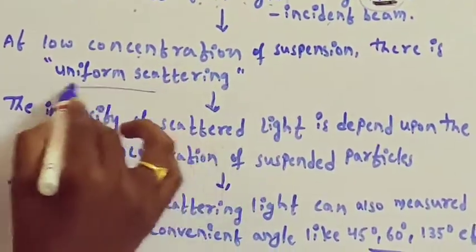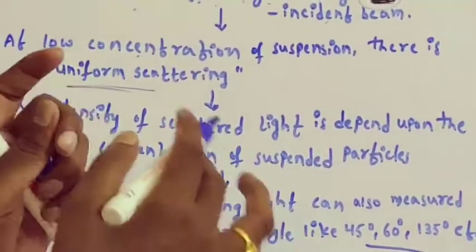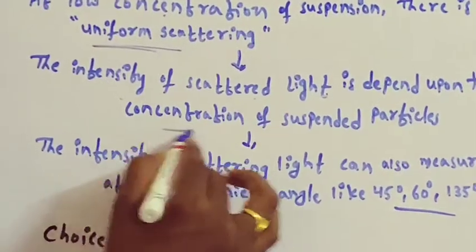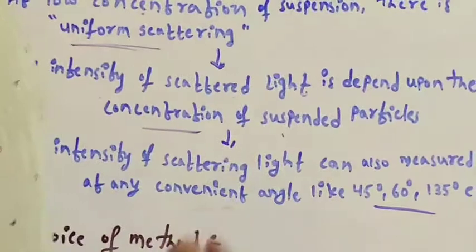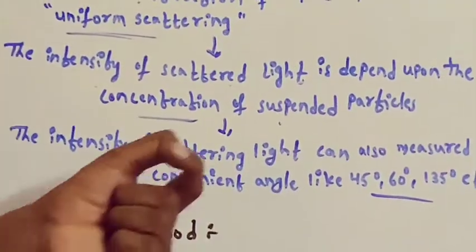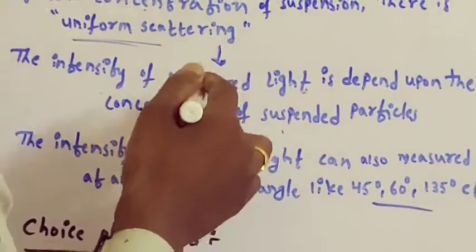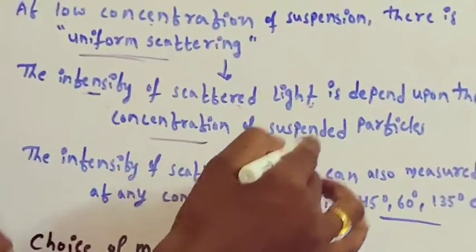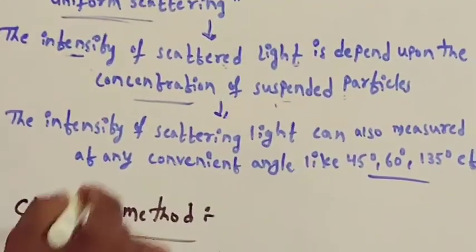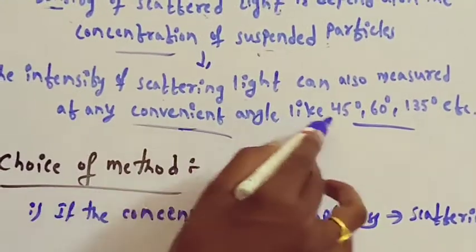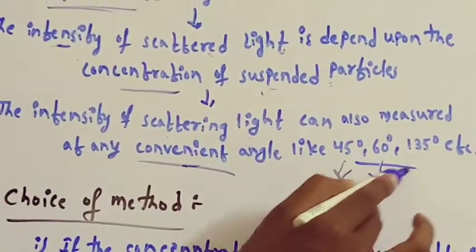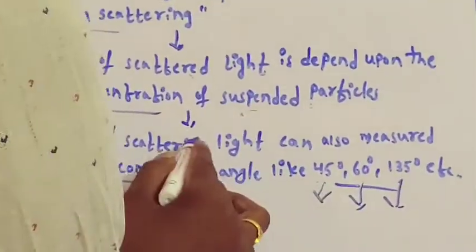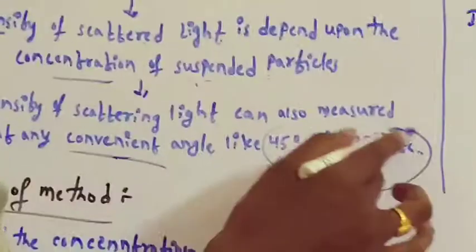At low concentration of suspension, there is uniform scattering. The intensity of scattered light depends upon the concentration of the suspended particles — more scattered light means more concentration, less scattered light means less concentration. The intensity of scattered light can also be measured at other angles like 45°, 60°, and 135°, but mainly at 90° to the incident beam.